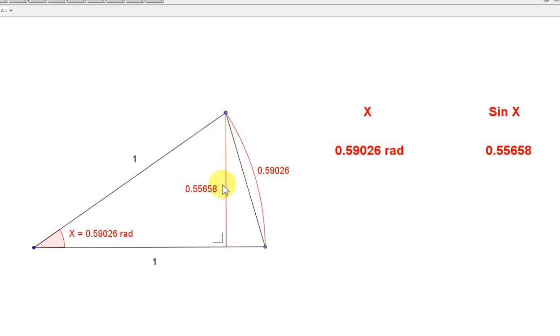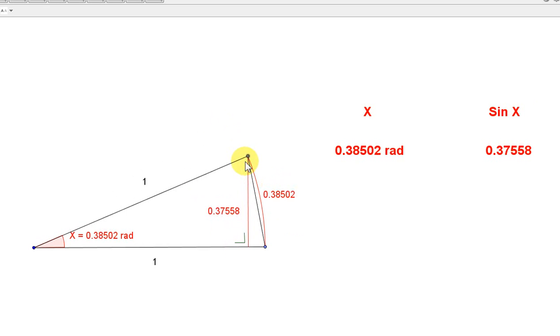Intuitively, that all makes sense, because this line here is getting closer and closer to the length of the arc as we make x smaller and smaller. These two red lines get closer and closer in length.